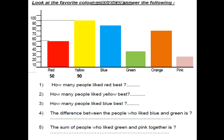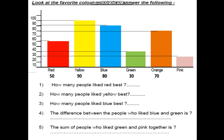Blue — use your ruler. It's ending until 80. Green — it reaches 30. Orange — till 70. Pink — till 20.